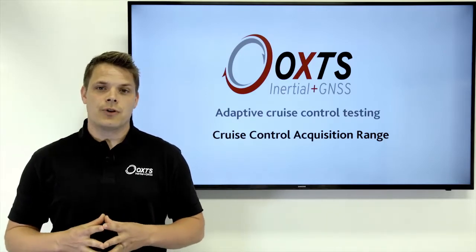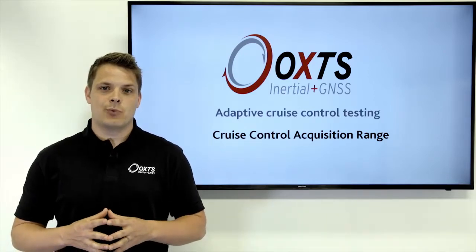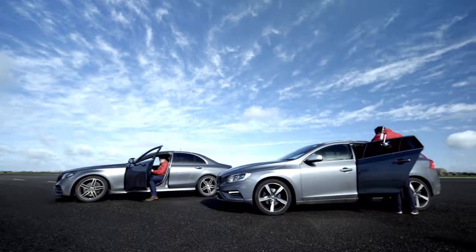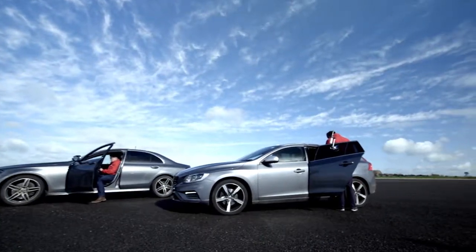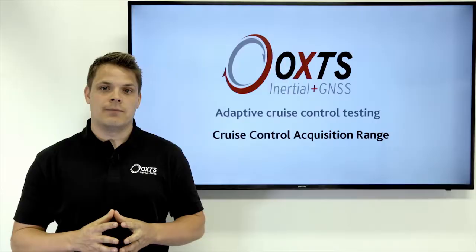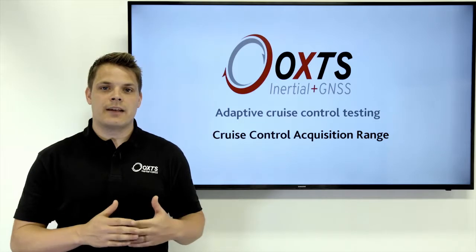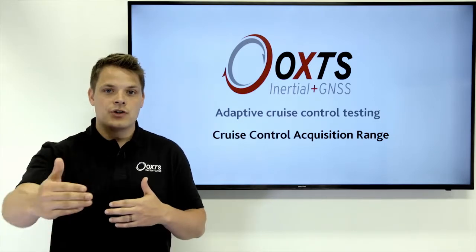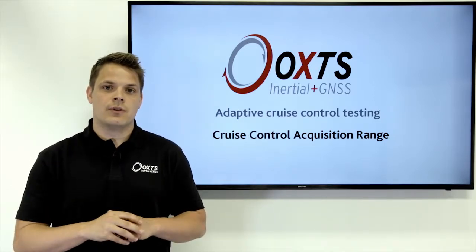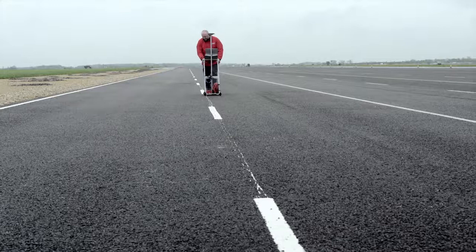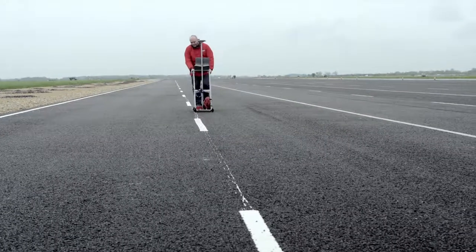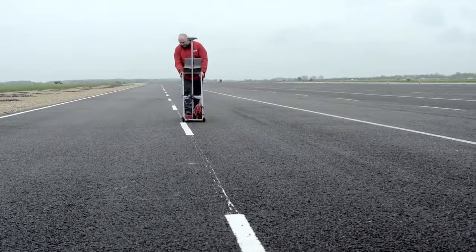For the cruise control ADAS tests, we have a hunter vehicle with an RT in it and a second vehicle that also has an RT. The RT range system calculates longitudinal range values between the two. We've also surveyed lane markings so we can get the precise lateral range between the vehicles and the lanes.